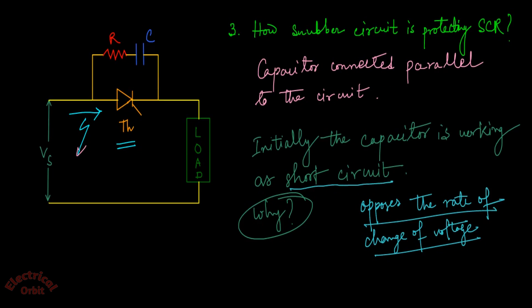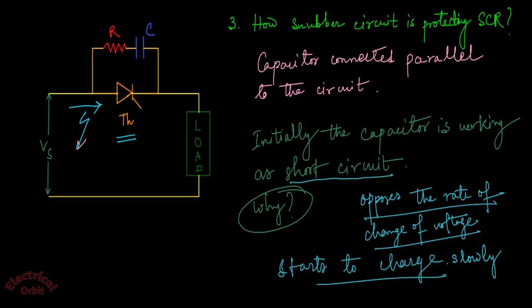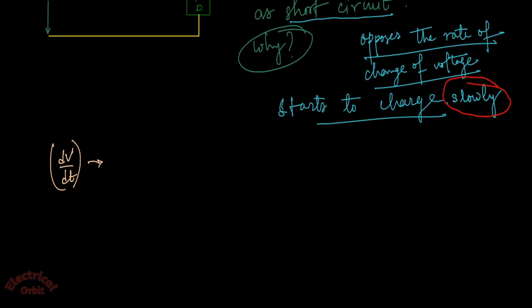And slowly it starts to charge. Now your question will be: why slowly? Because as I have mentioned earlier, dv/dt means rate of rise of voltage.